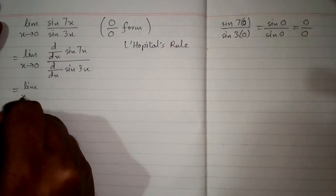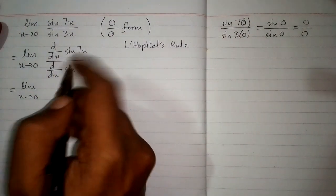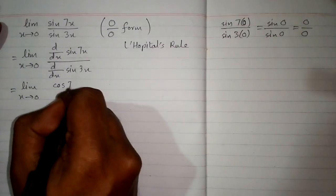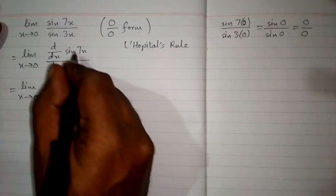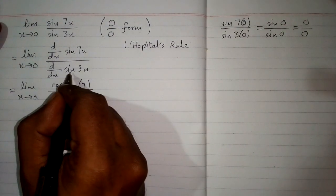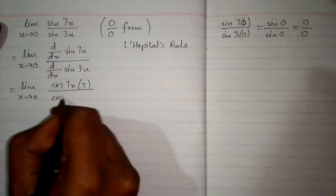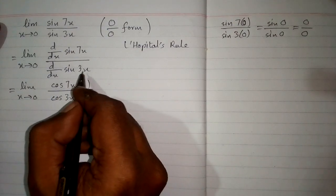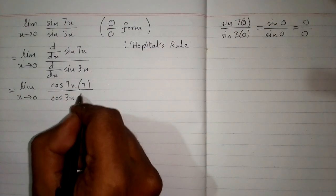So the derivative of sine of 7x is cosine of 7x multiplied by the derivative of 7x which is 7. And the derivative of sine of 3x is cosine of 3x multiplied by the derivative of 3x which is 3.